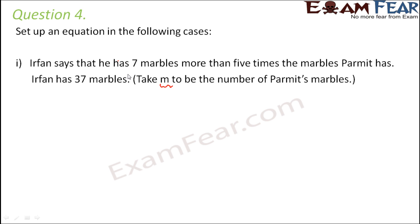So what is the criteria? Irfan has 7 marbles more than 5 times Permit's marbles. So 5 times Permit's marbles would be 5m plus 7. So 5m plus 7 should be Irfan's marbles. But actually Irfan has how many marbles? He has 37 marbles. Therefore 5m plus 7 equals 37 would be the equation.